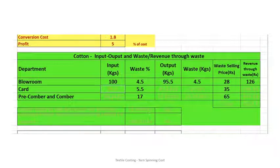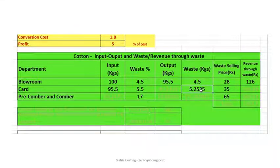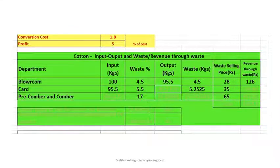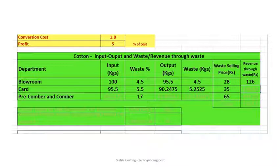The output of blow room (95.5 kg) is the input to card. Waste percentage is 5.5%, so waste = 95.5 × 5.5% = 5.2525 kg. Output = 95.5 − 5.2525 = 90.2475 kg. Revenue through waste = 35 × 5.2525 = 183.84 rupees.